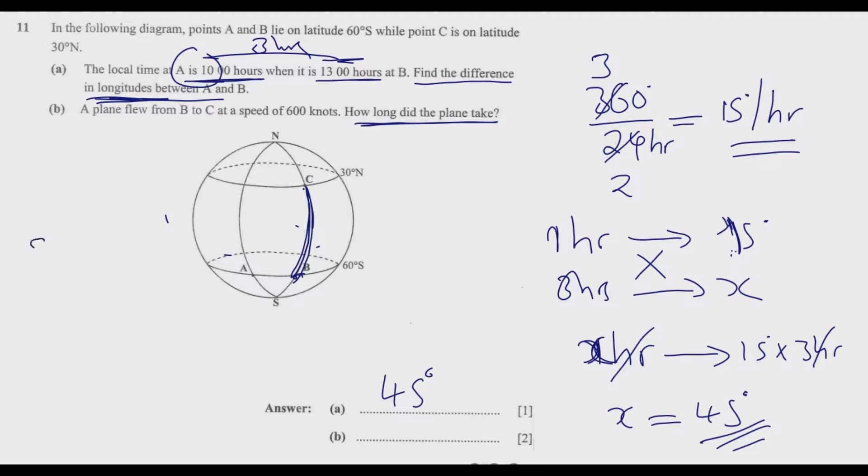We know that speed is given by distance over time. We've been given speed in knots, which is nautical miles per hour. The question is asking us to find time. Can we find distance? Yes, because we've been given these latitudes. Once we know the angle, we can find the circumference of this sector.